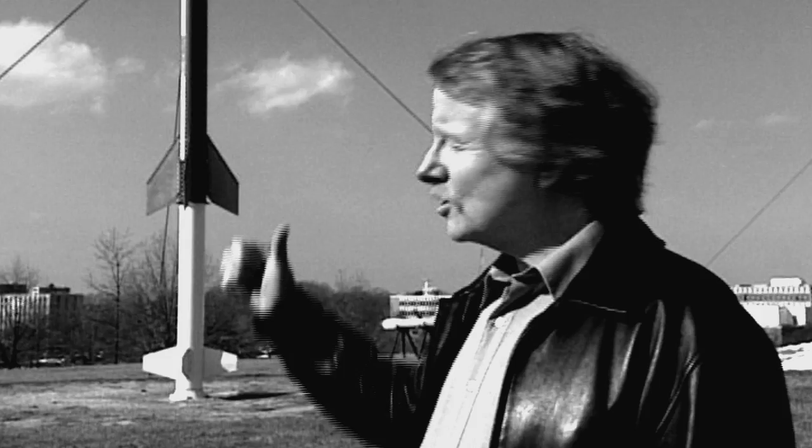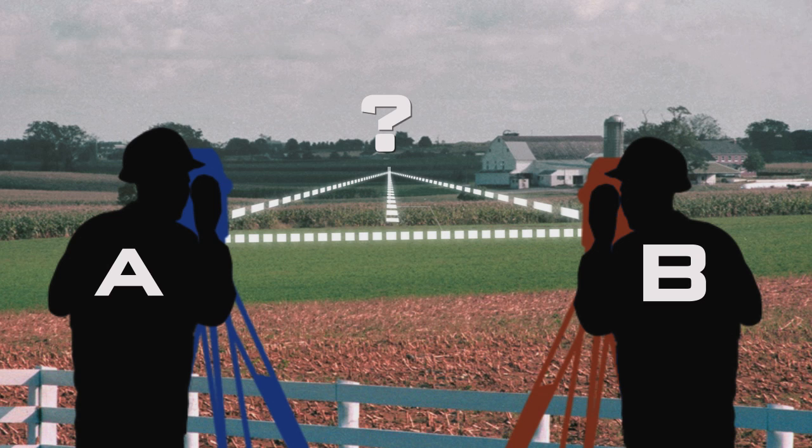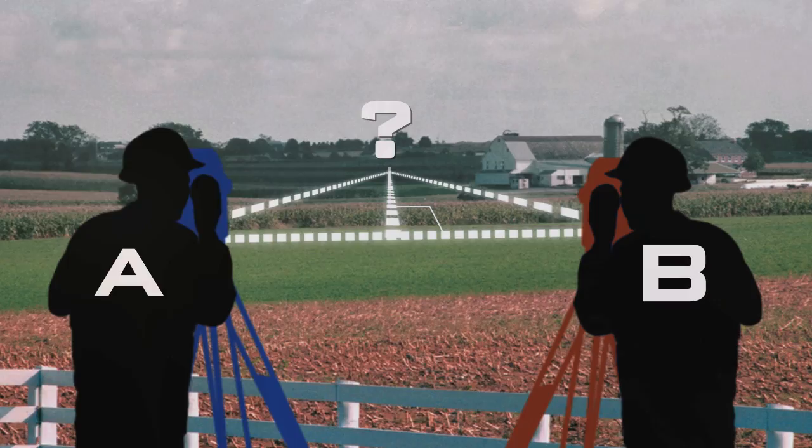Parallax is the observed shift in position of an object when viewed from different positions. Surveyors use parallax or triangulation when they need to determine the distance to a remote object. If surveyors could measure remote distances, then why not astronomers?